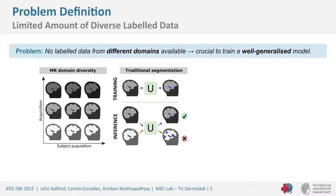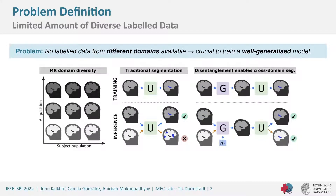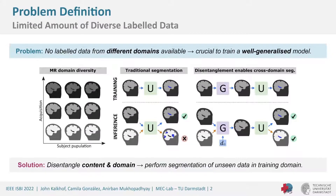One way to solve this is to have more labeled data from these new domains, but this requires an expert who puts in the time and effort to create new segmentations. So the way we want to approach this is by having a generator that learns to disentangle our input into content and domain, so we can transform unseen domains into our training domain and have our U-Net still perform well on them.